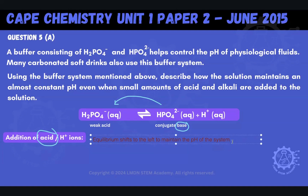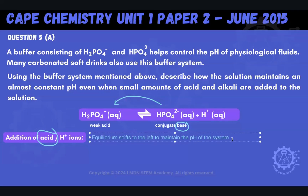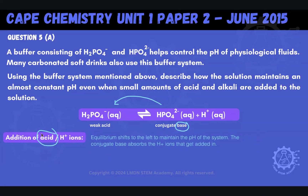The equilibrium shifts to the left to maintain the pH of the system. Specifically, the conjugate base absorbs the H+ ions that get added. We're going to get more of the weak acid being present — we're shifting to the left. That's what happens whenever we add an acid to a buffer system: it finds the base, and we maintain the pH that way.